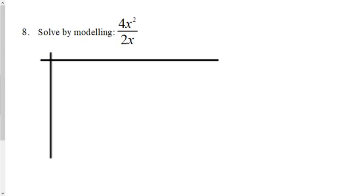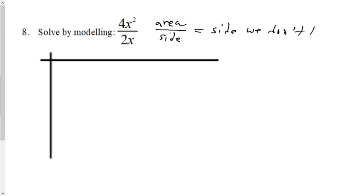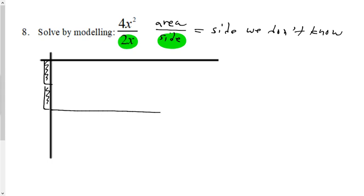The second question is to solve by modeling — this time we have division. In division, the top number is our area, the bottom term is one side, and we're solving for the other side. When doing division modeling, always start with the side you do know. I'll put my 2x here — solid because it's positive 2x. Then I give myself an open space and put 4x squared as my area.